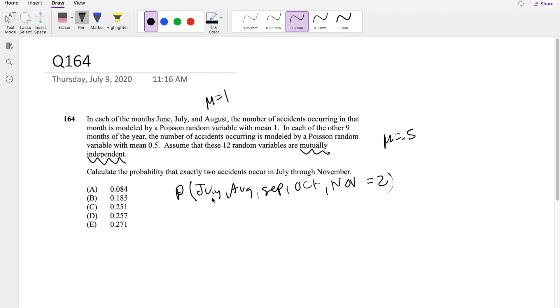So we can assume that for July, the mean is 1, and for August, the mean is 1, September the mean is 0.5, October it's 0.5, November 0.5.